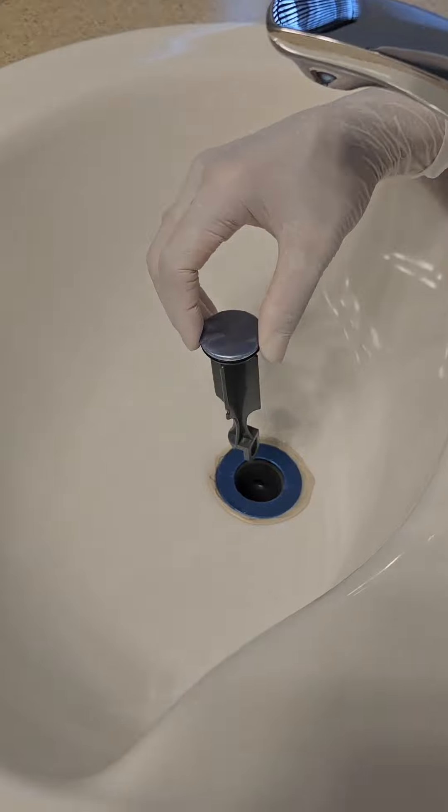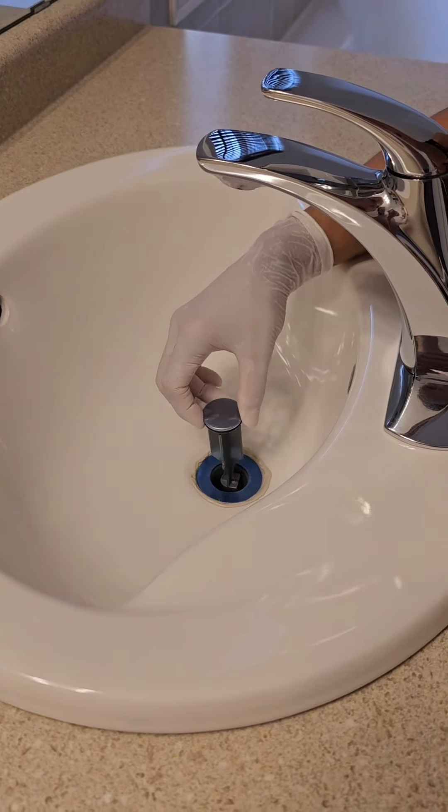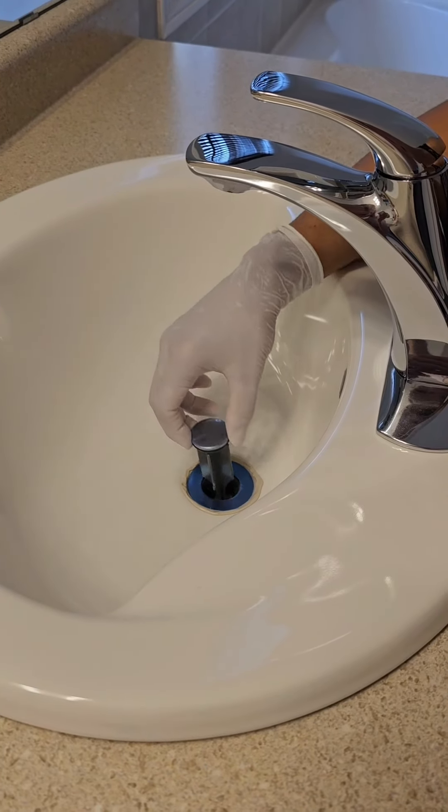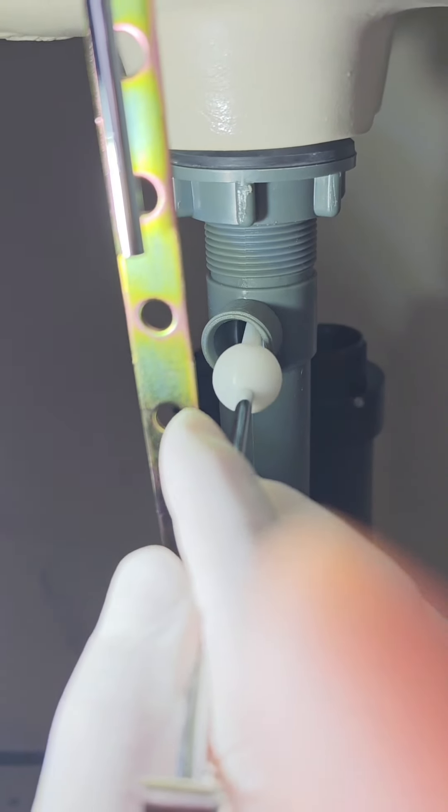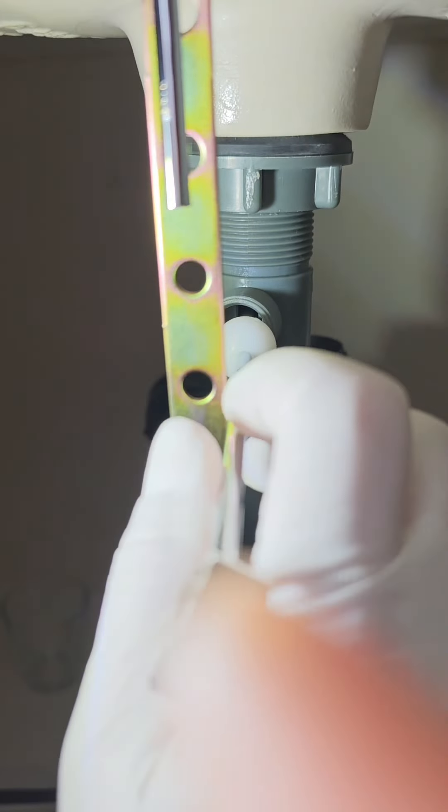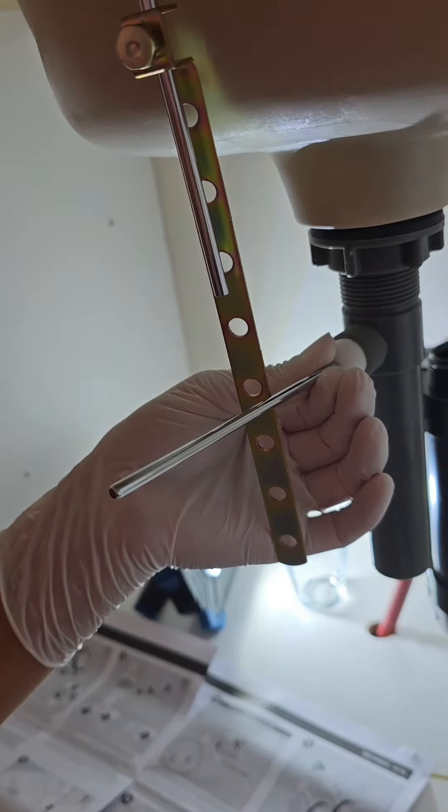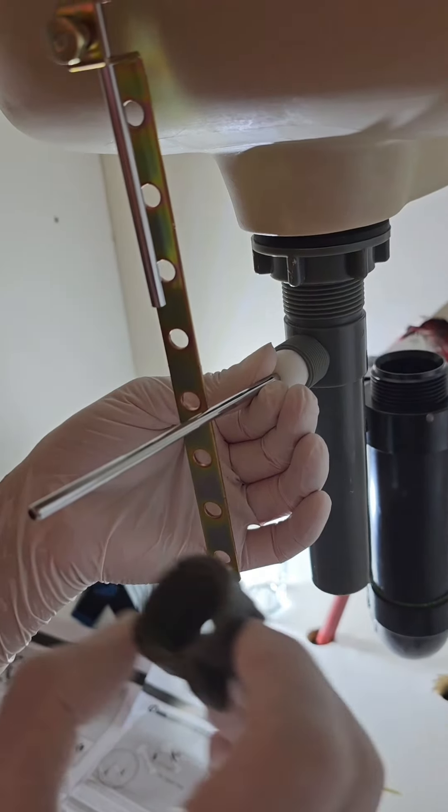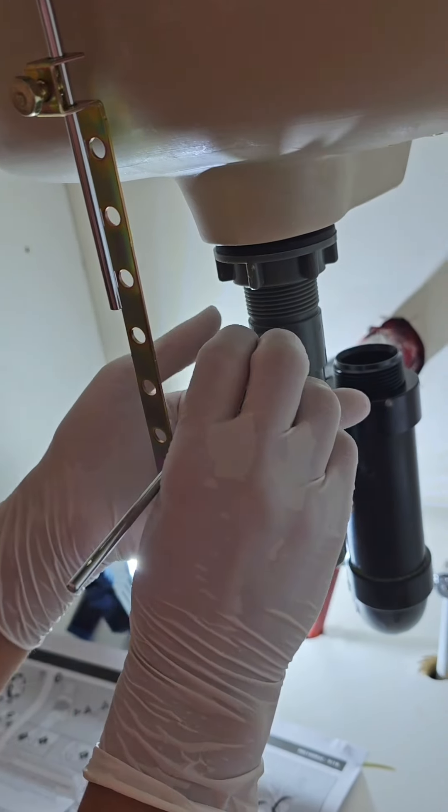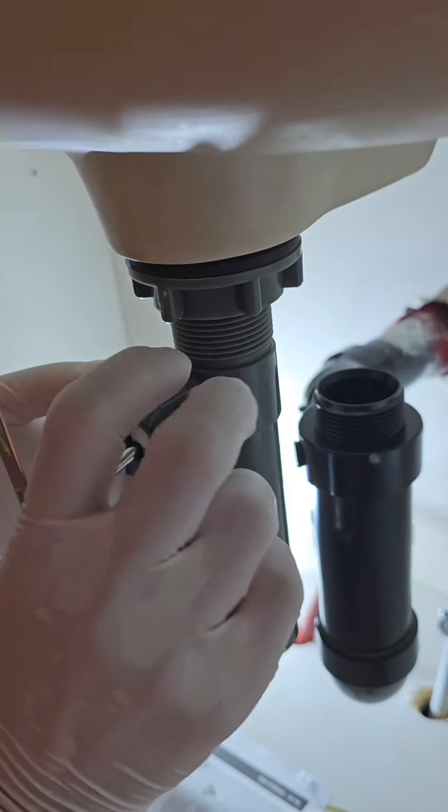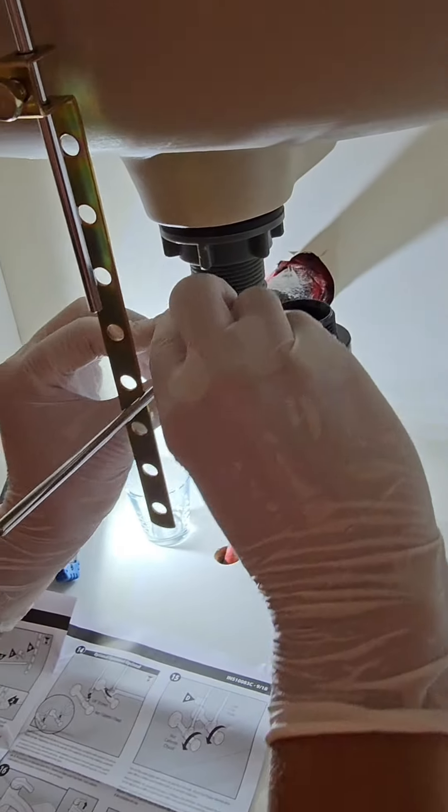This stopper has a hoop on it. Put it in with the hoop facing the pivot hole. This allows the rod to go into the hoop. Try to set the rod in the hoop. Tighten the knot by hand.